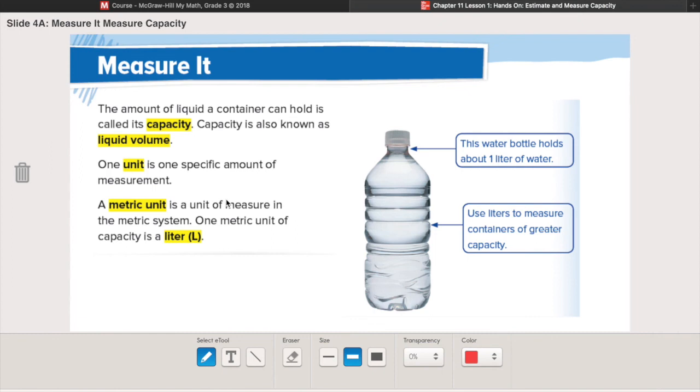Capacity is the amount of liquid that a container can hold. So when we're talking about capacity, we're talking about liquid, liquid volume. That means how much liquid can be held within a space. We're talking about liquid that is taking up space. Another word for this is liquid volume.